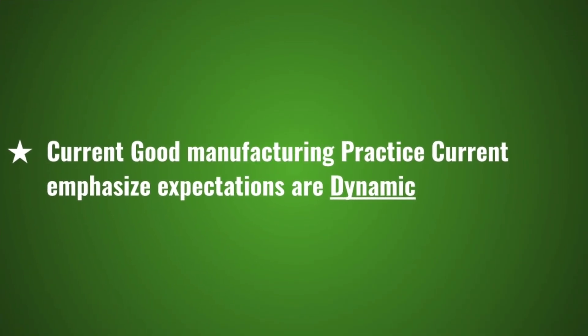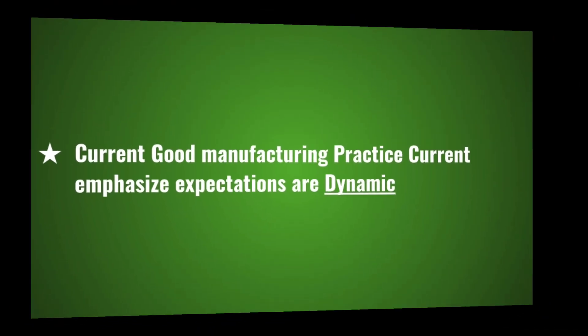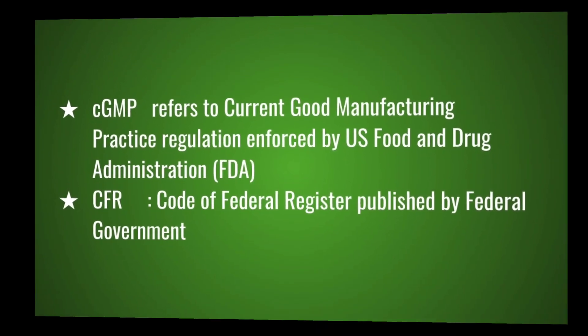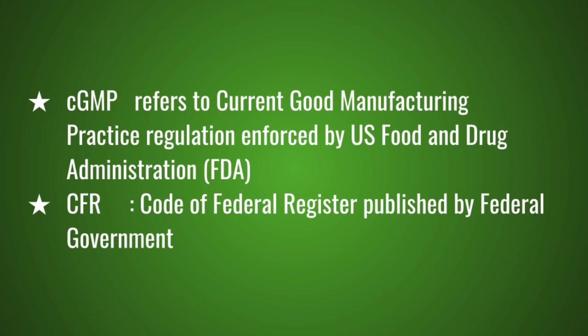Current GMP emphases and expectations are dynamic. CGMP refers to Current Good Manufacturing Practice, enforced by the U.S. FDA — Food and Drug Administration. It is published in the CFR — Code of Federal Register — published by the federal government.